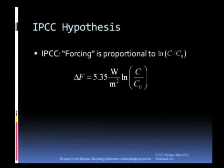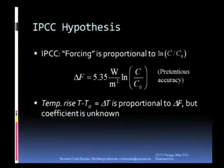And a doubling would mean that C is equal to twice C0. So, logarithm of two is .69315, and that's where Scott gets his figure of 4 watts per square meter. We're not going to consider that to be in dispute. The accuracy is a little bit pretentious, but that's of no great concern.